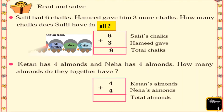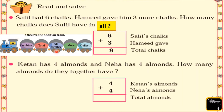When you hear words like plus, combine, total, all together, more, and collect — what do we do? Yes, we add them together and use the plus sign. Now tell me how many chalks Salil has. Yes, Salil has 6 chalks and Hamid gave him 3, so in total Salil has 9 chalks. 6 plus 3 is equal to 9.